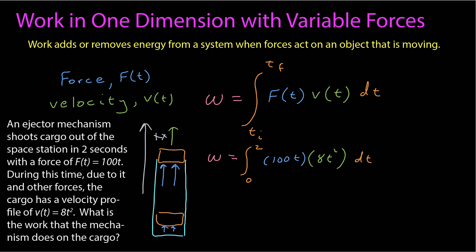To calculate the work I can just plug those functions into my integral. The work goes from 0 to 2, force times velocity integrated over time. Calculating those together: 800t cubed. The indefinite integral is 800t to the 4th over 4, or 200t to the 4th, evaluated at 2 and 0, which is then 3200 joules. So if we know those functions we can go ahead and calculate this directly.